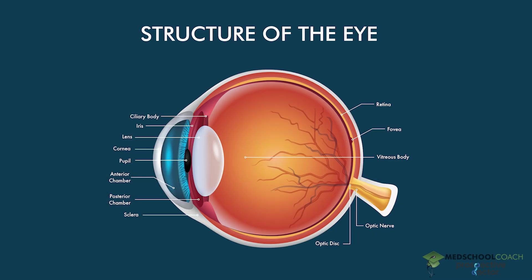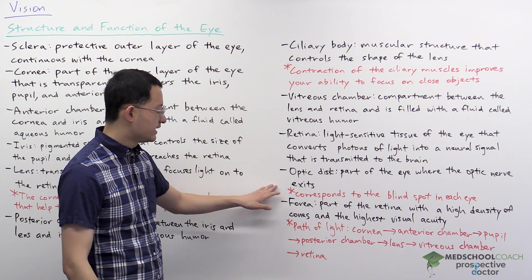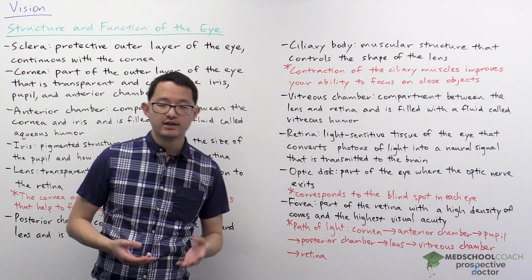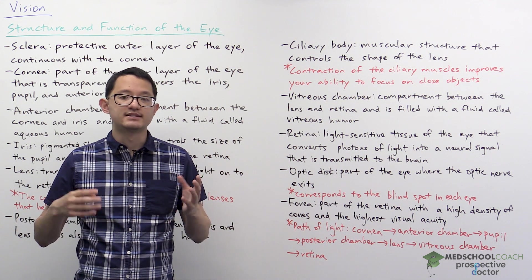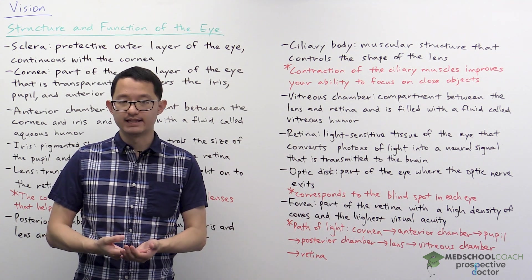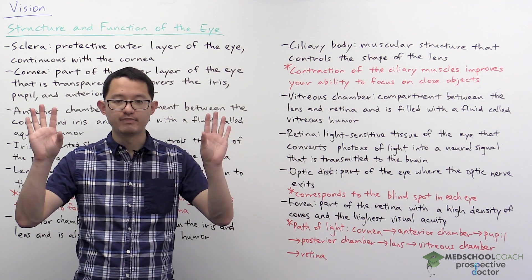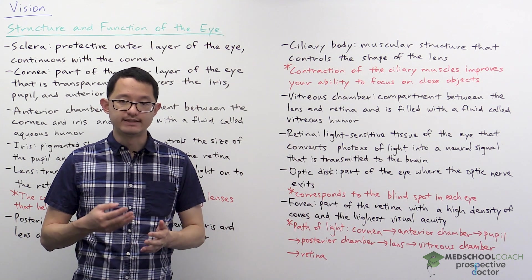If you look again at the diagram, you see that the optic disc is where that optic nerve exits the eye, and that part of the eye does not have any photoreceptors. So because of that, the optic disc also corresponds to the blind spot of each eye. What that means is there is a spot in each of our eyes that is not able to see anything. And usually we don't notice this at all because our brain essentially just makes our vision continuous, but the blind spot is real and does exist.